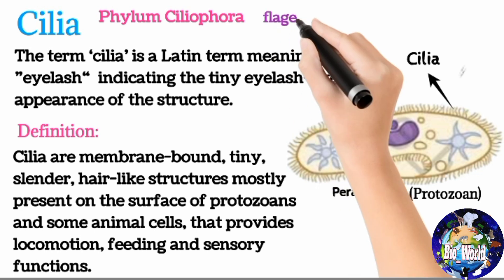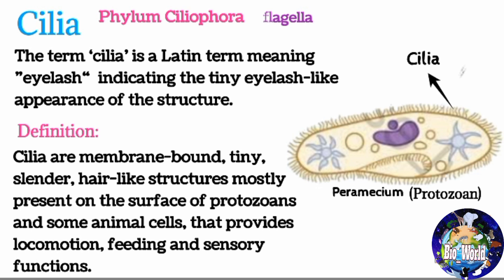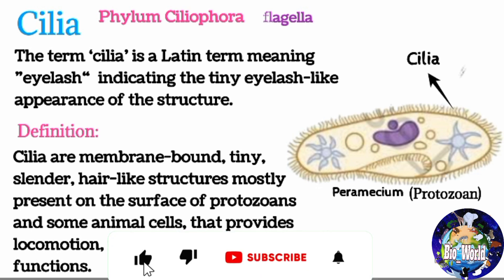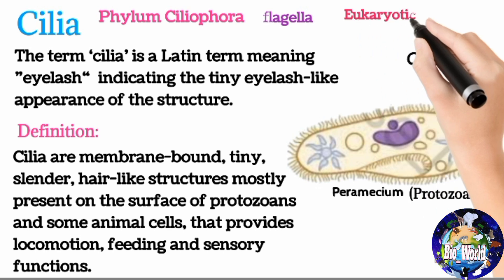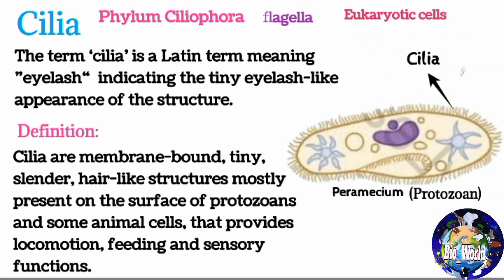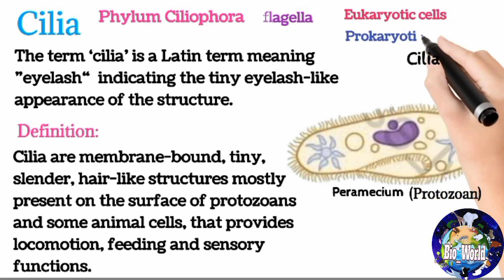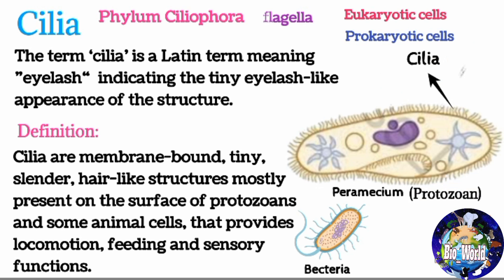Cilia are different from flagella, which are mostly longer and fewer in number on the cell. Cilia also differ from flagella in other aspects like composition, movement, and functions. Cilia are present only in eukaryotic cells and cannot be found on prokaryotic cells like bacteria. Instead, bacteria contain other structures called pili that perform similar functions to cilia on the cell surface.